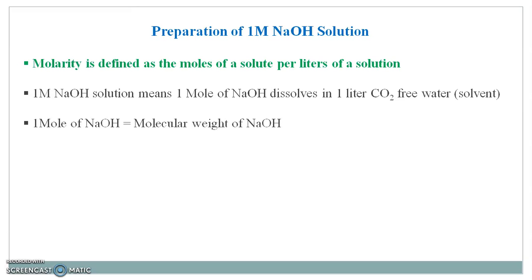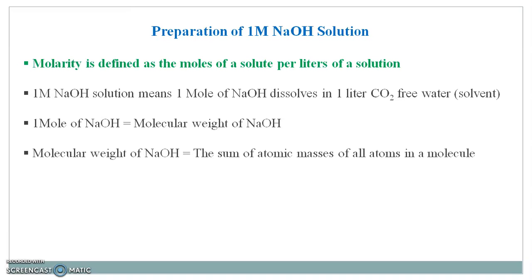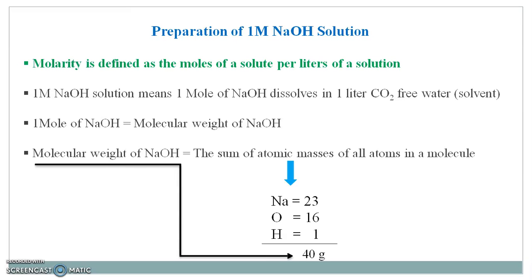So 1 mol of sodium hydroxide is nothing but the molecular weight of sodium hydroxide, which is the sum of atomic masses of all atoms in a molecule. Sodium hydroxide contains sodium, oxygen, and hydrogen atoms. Sodium has atomic weight 23, oxygen has 16, and hydrogen has 1. The summation of all these atomic masses gives 40 grams, which is the molecular weight.